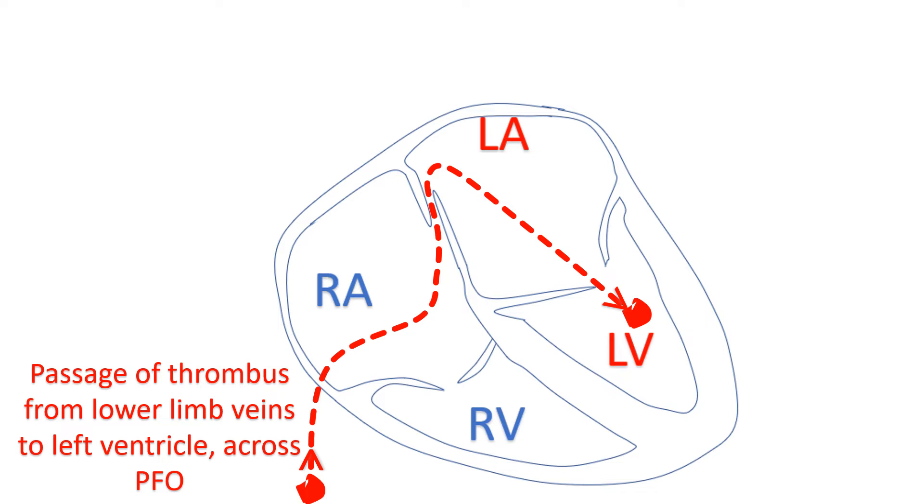The clot can move from the left atrium to the left ventricle and then to the aorta. From the aorta, the clot can move to any part of the blood circulation.